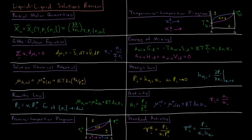This video is a review of the chapter on liquid-liquid solutions in chemical thermodynamics. We start with partial molar quantities, which are the important quantities of interest for solutions. These are indicated by having the property with a bar over it for the molar part and a subscript i for the partial part.